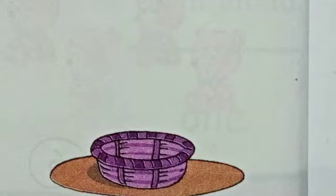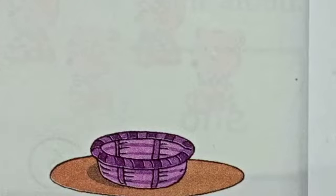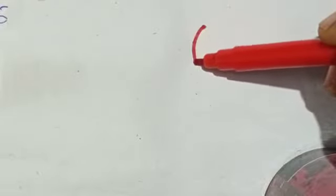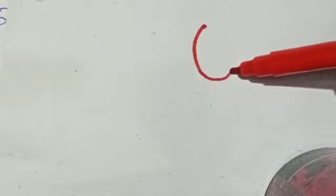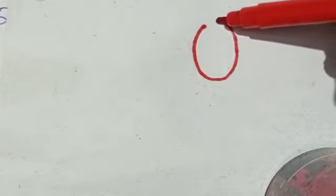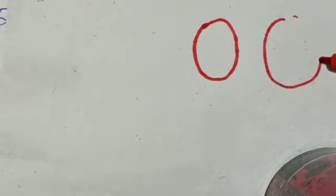When nothing is left, we say it as zero. Nothing is left — we say it as zero. How can we write zero? We start from here, move like this, rotate like this, and this is zero.